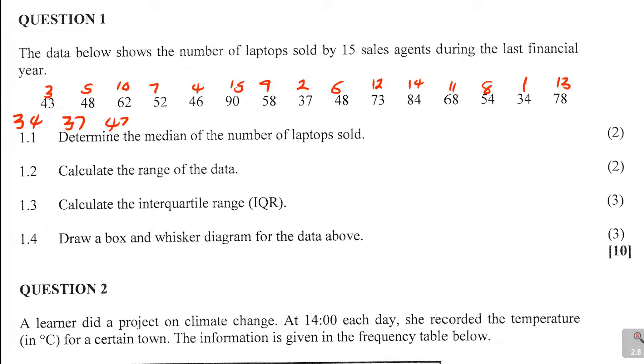I've got number one which is 34, and then 37. I'm arranging it now and I need enough space so that I make sure everything fits in. So I've got 34, 37, number three is 43, number four is 46, number five is 48, number six is 48, number seven is 52, number eight is 54, number nine is 58, number 10 is 62, number 11 is 68, number 12 is 73, number 13 is 78, number 14 is 84, and number 15 is 90.